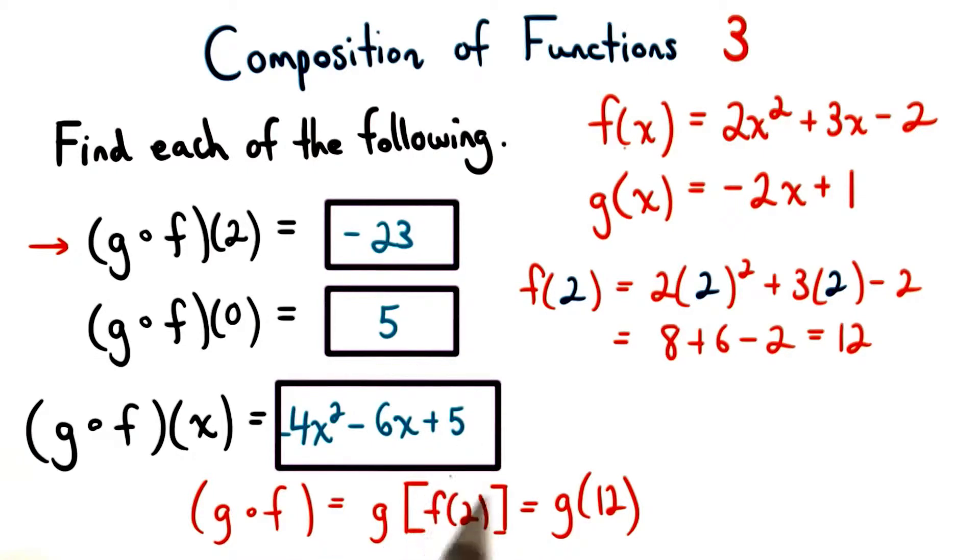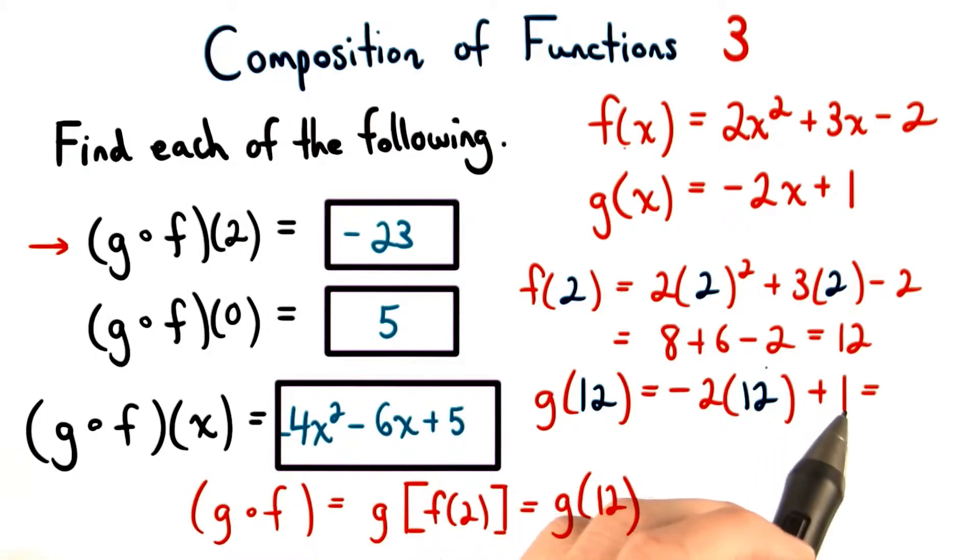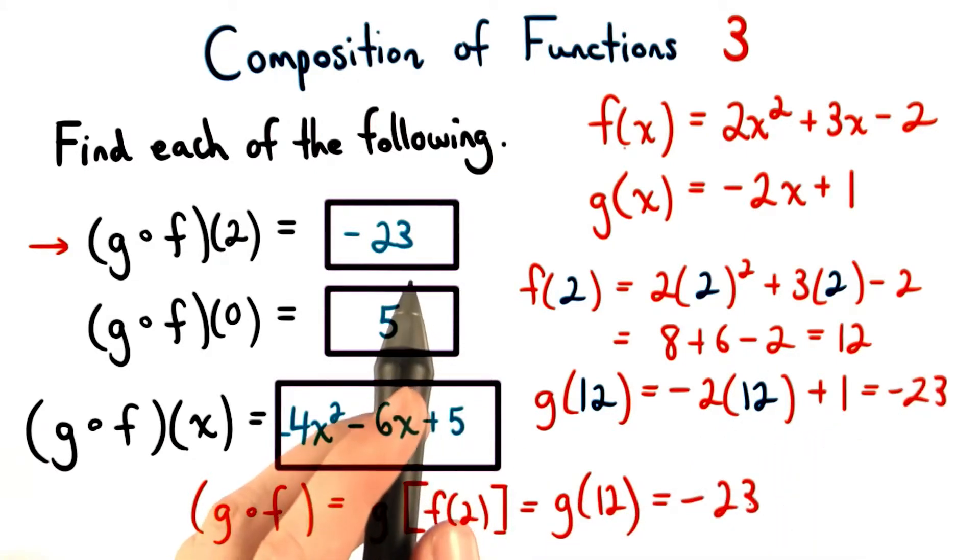So we just replace f of 2 with 12. Now, we just need to find g of 12. We let g's input be 12, so negative 2 times 12 is negative 24 plus 1 is negative 23. This is how we get our first value.